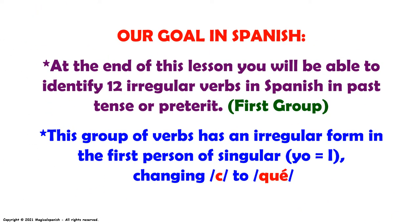Our goal in Spanish. At the end of this lesson, you will be able to identify 12 irregular verbs in Spanish in past tense or preterite. This is going to be our first group. This group of verbs has an irregular form in the first person singular — yo, I — changing C to QUE.